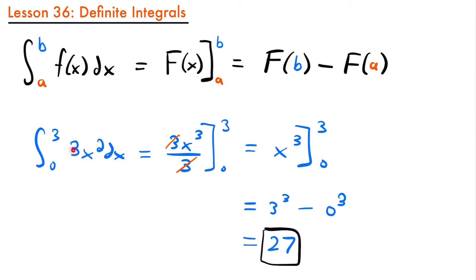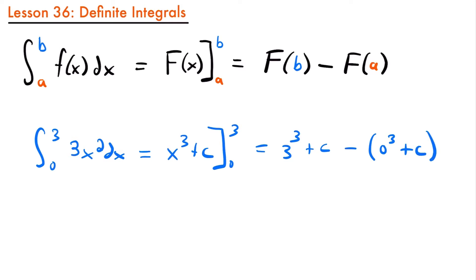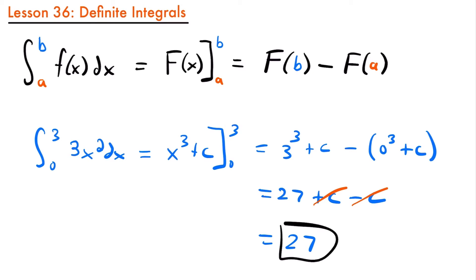Notice that when we found the antiderivative of 3x squared, I didn't add a plus C to the end. There's a reason for that. If we said the antiderivative was x cubed plus C evaluated from 0 to 3, we'd have 3 cubed plus C minus (0 cubed plus C), which equals 27 plus C minus C. These two C's cancel out, and we again get 27. So the constant of integration C is not necessary when evaluating definite integrals.